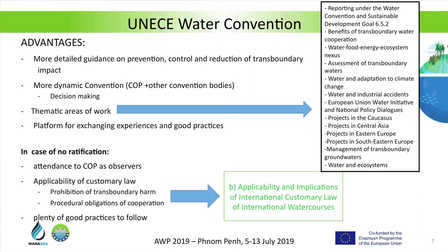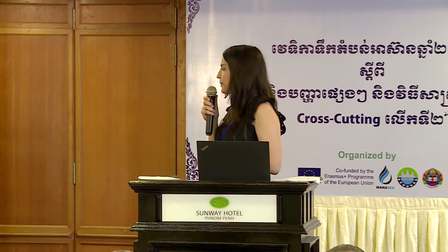Customary law reflected in the text of this convention is also applicable anyway. So again, more research is needed: the identification of that customary law that is going to be binding for any state, even if they are not party to this convention. At least the prohibition of transboundary harm and procedural obligations connected with cooperation — we know they are customary, but we have a lot of doubts about their exact content. So more research is needed. This convention is also full of plenty of good practices to follow, so it can be very useful for Cambodia or for the Mekong riparian states, even if they are not part of it.